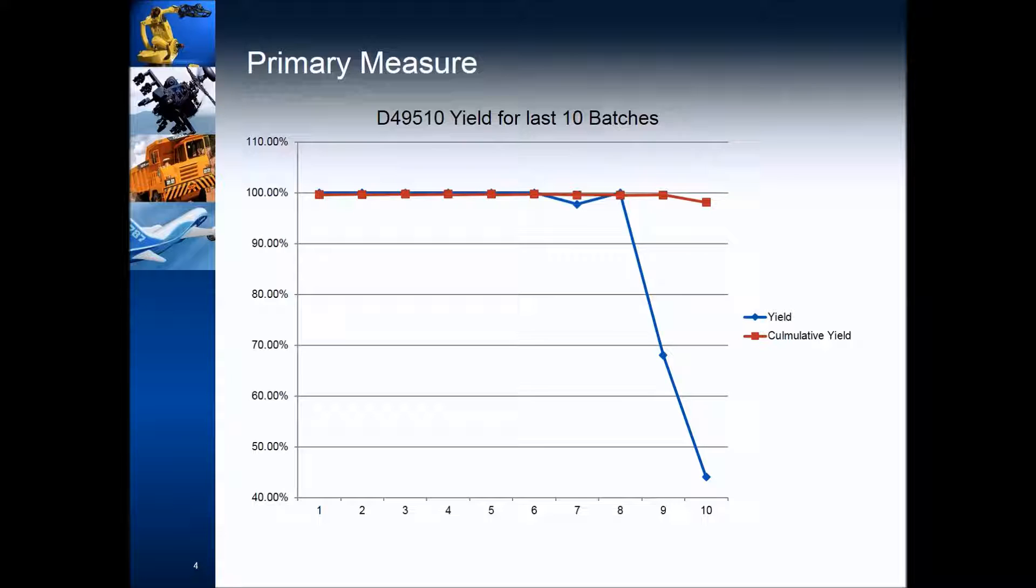And here's the current performance graph. This is just discrete data, pass, fail. Here's how the batches have been performing. Everything in control. It's a process in control. There is no chaos going on here. And then all of a sudden, what the hell was that? What's gone on here?